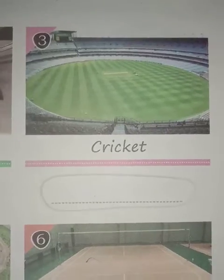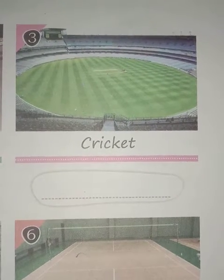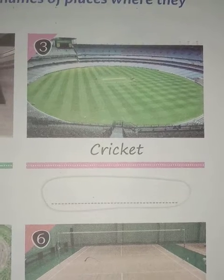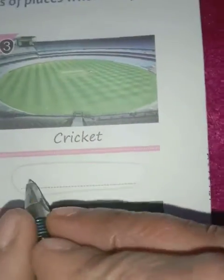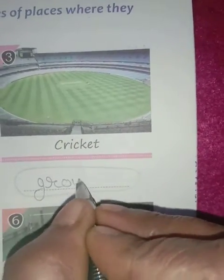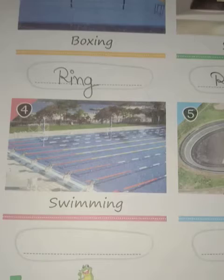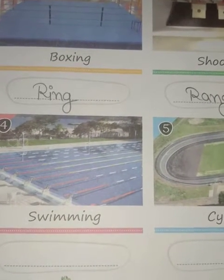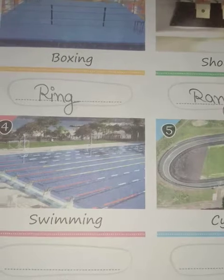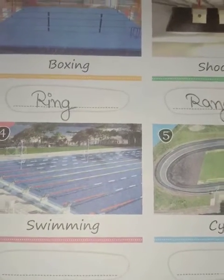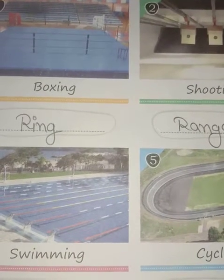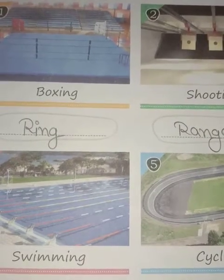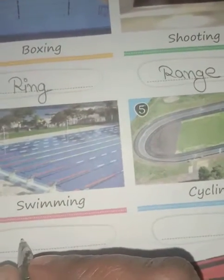Third is cricket. Cricket is a bat and ball game played between two teams of eleven players on a field. Where is cricket played? The answer is ground. Fourth is swimming. Swimming is an individual or team racing sport that requires the use of one's entire body to move through water. The sport takes place in pools, so the answer is pool.